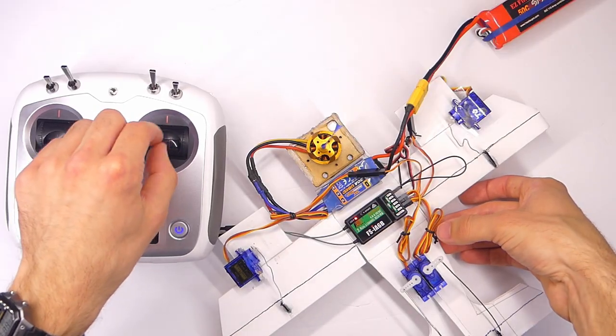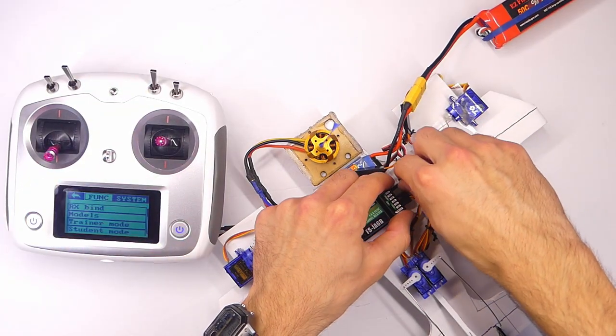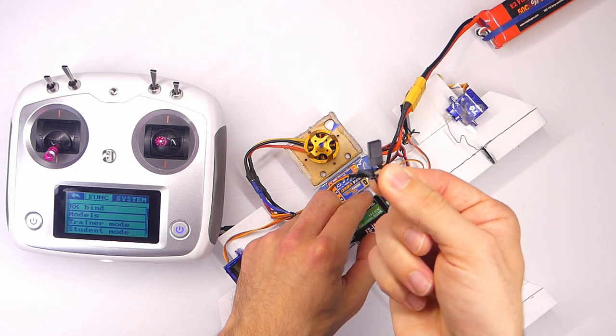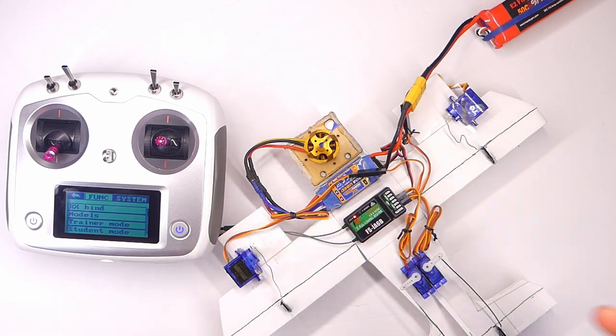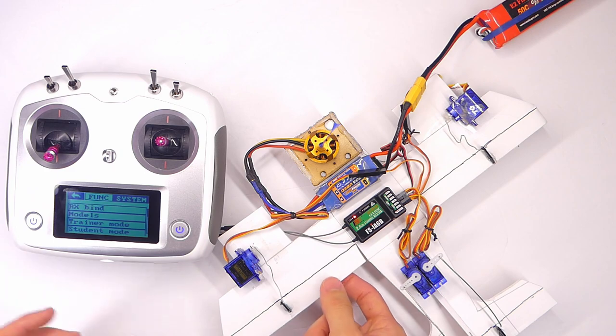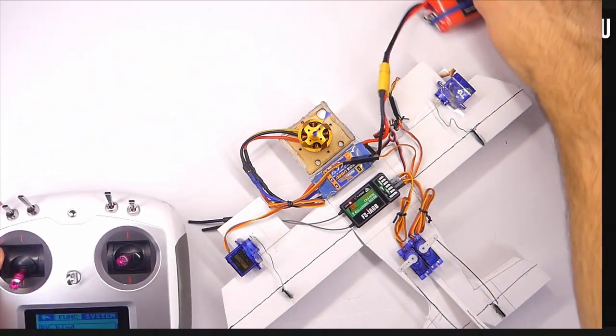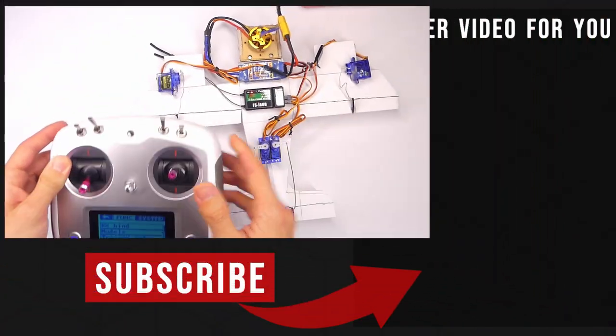We can control our servos now. What we want to do is remove the binding plug - toss that thing away, but hold on to it because you're going to need it in the future. Trust me. And you should be good to go, ready to rock and roll, moving and grooving.